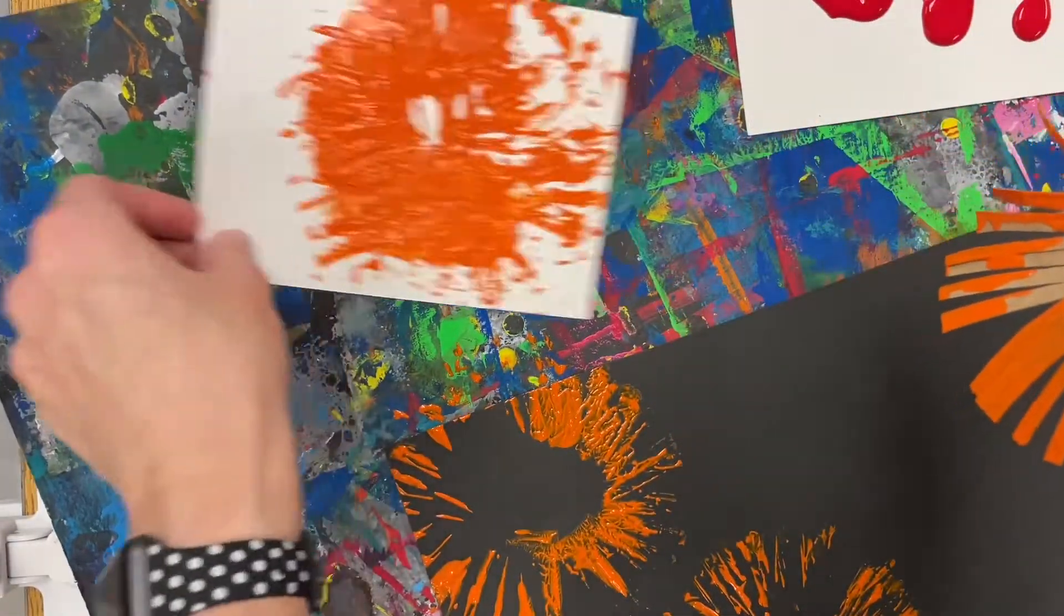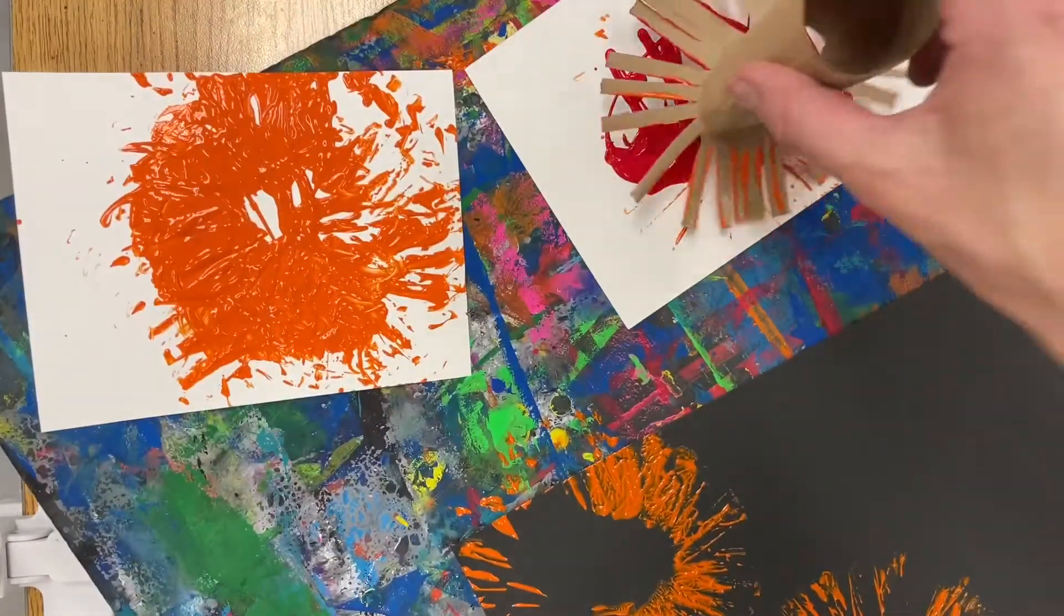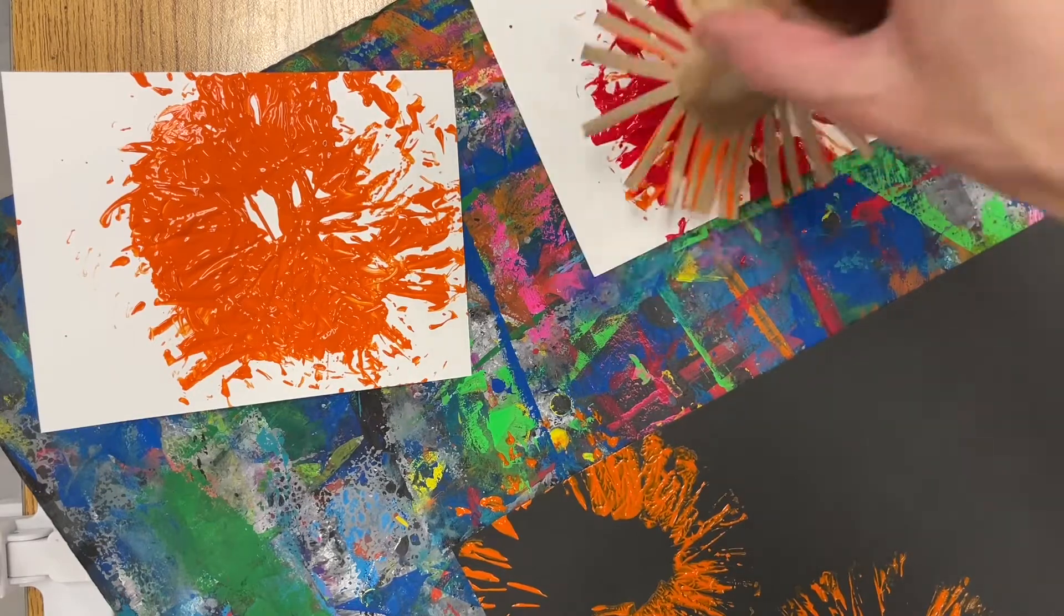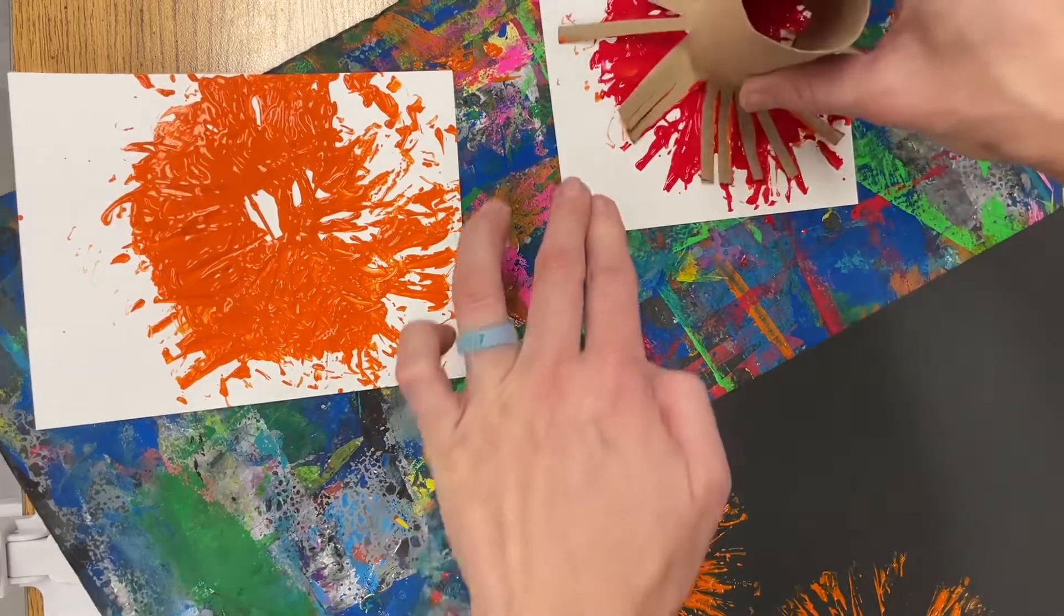After you've done two or three flowers, you can switch colors. It's okay if the other color is still on your piece of cardboard. Same exact process. We have to be really gentle while we're doing this or it probably won't work out very well.